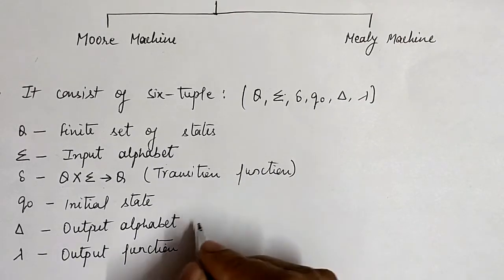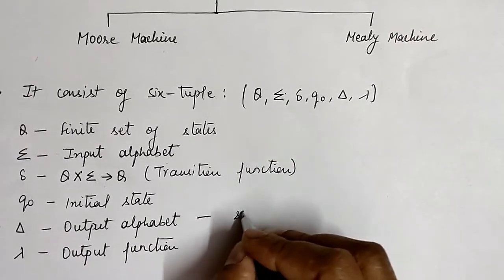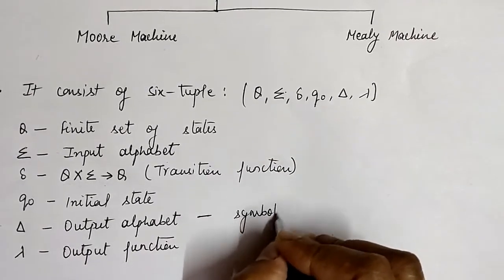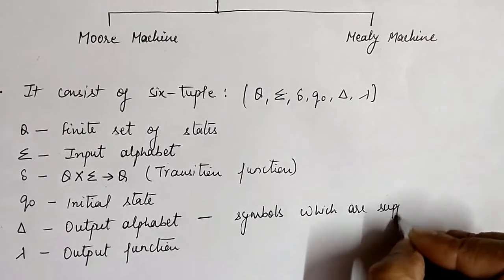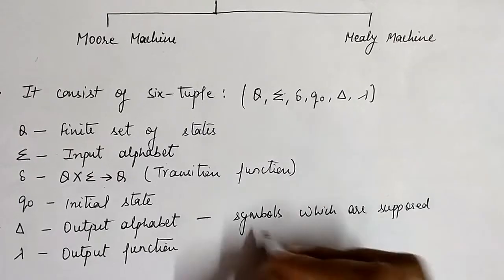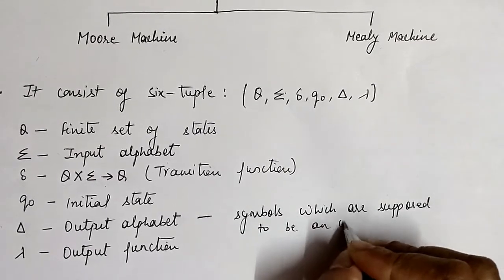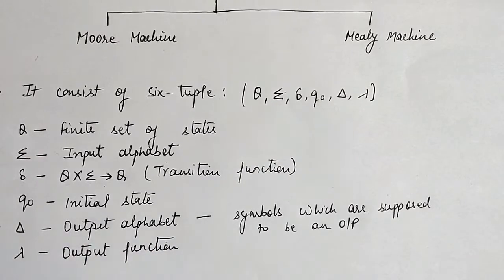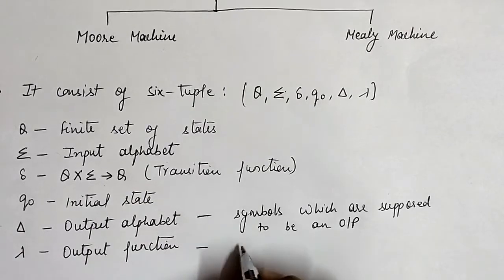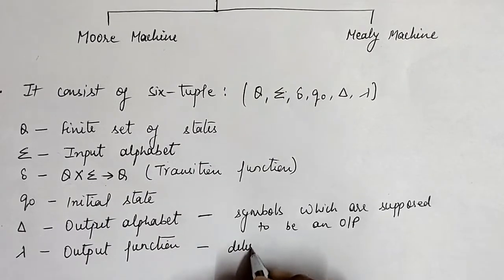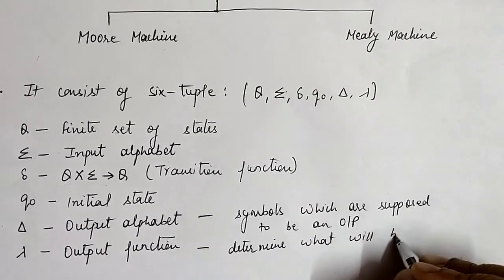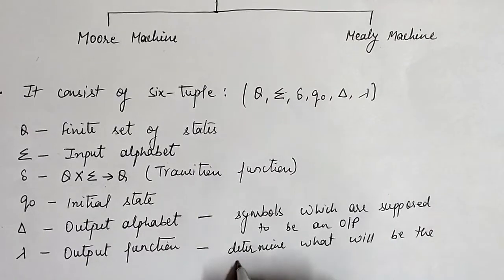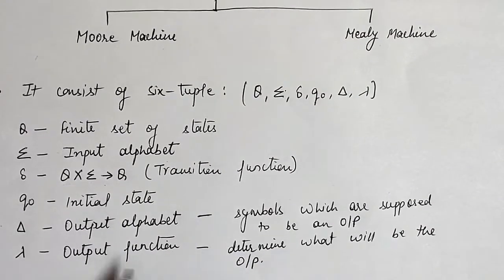Lambda is the output function which determines what will be the output. The output alphabet represents the symbols which are supposed to be as output — all those symbols come under the category of output alphabet and are represented by capital Delta. Lambda determines what will be the output for a particular input, so this represents the output function.